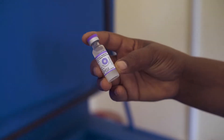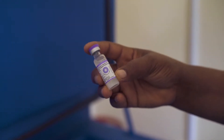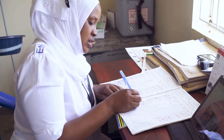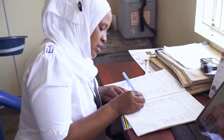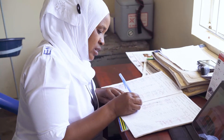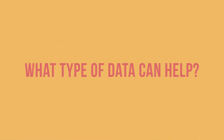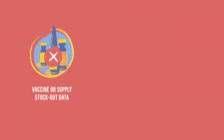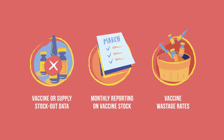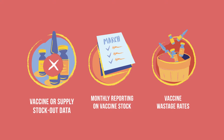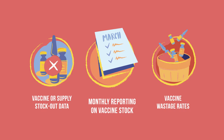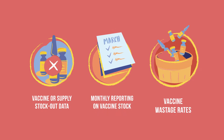One of the best ways to identify problems is to look at the data that has been gathered by health workers and managers. You should look at these three pieces of data every month: vaccine or supply stock-out data, monthly reporting on vaccine stock, and vaccine wastage rates.